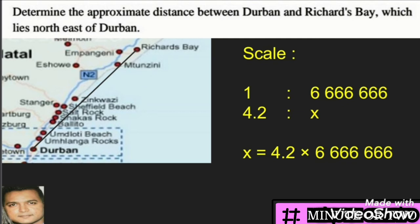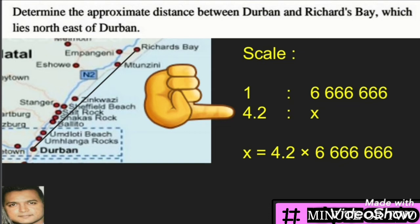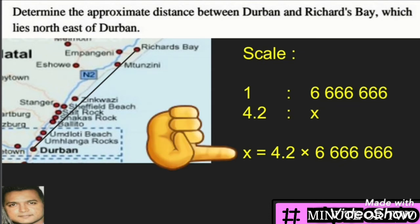We then write down our scale. Remember, in exams questions are generally in sequence, so what you worked out previously you may use in the next question. Our scale tells us that 1 centimeter on the map equals 6,666,666 centimeters on the ground. Using the same format, we know we have 4.2 centimeters as our distance on the map, so we place this below, and we place x for the distance on the ground.